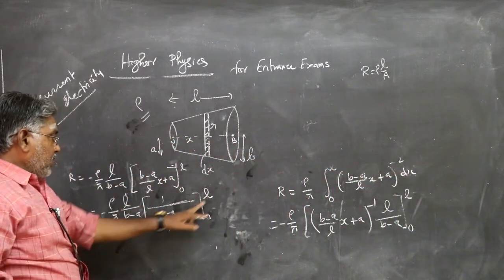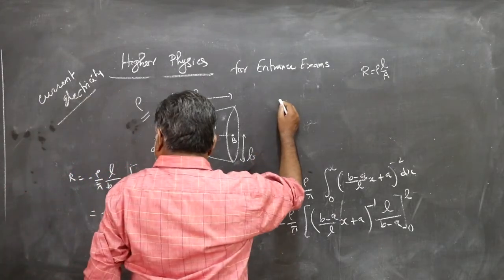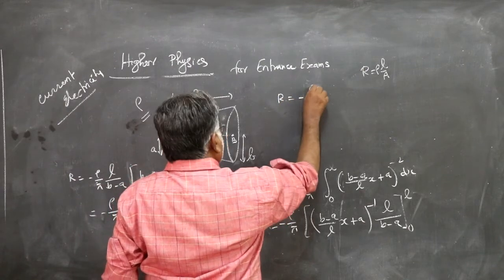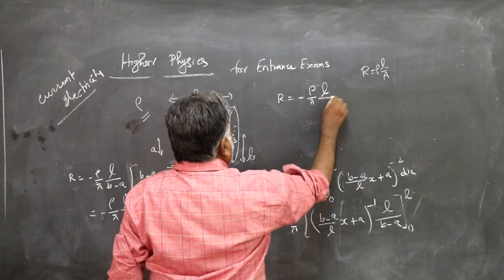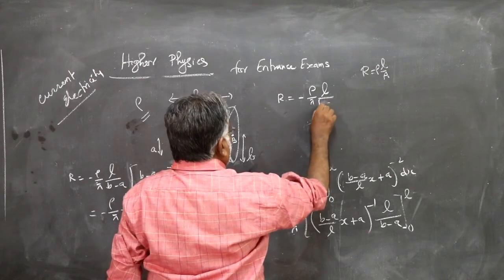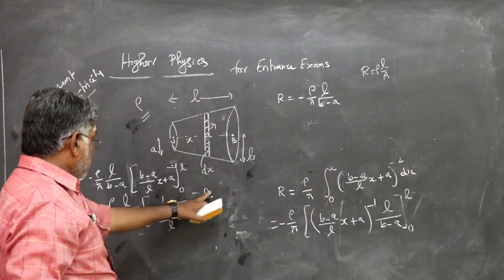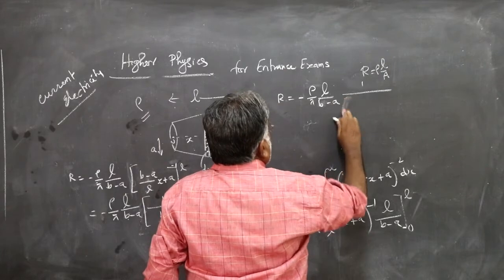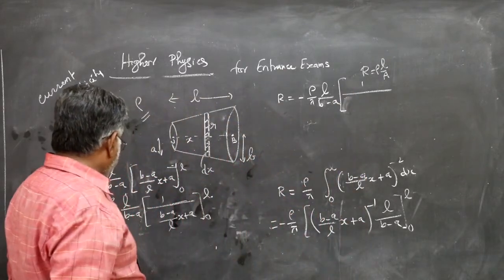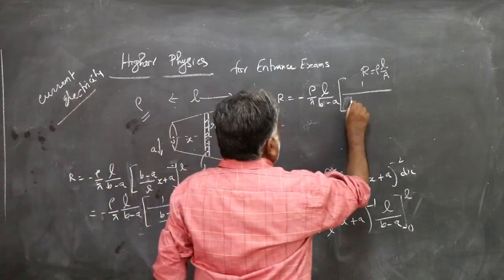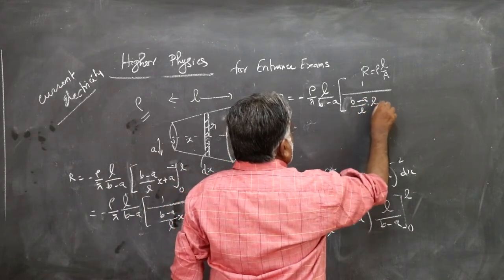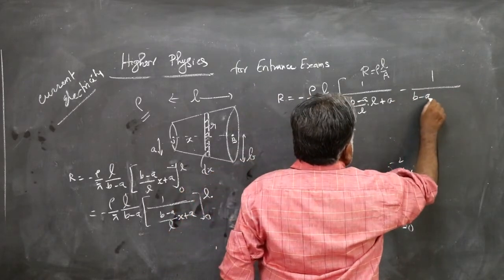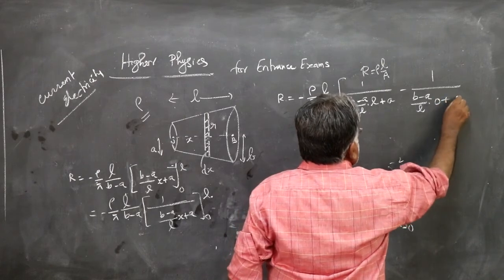First you put in place of x the upper limit. There is a minus symbol here, don't forget. So R equals minus rho by pi, L by B minus A, 1 by (B minus A by L into L plus A) minus 1 by (B minus A by L into 0 plus A), because lower limit is 0.